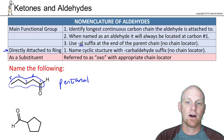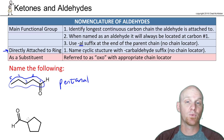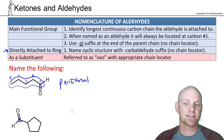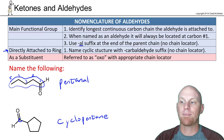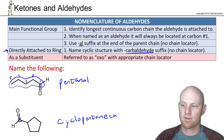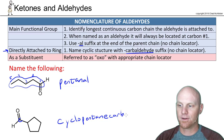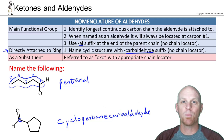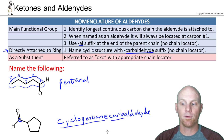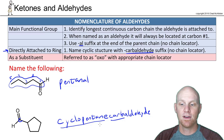If an aldehyde is directly attached to a ring — meaning the carbonyl carbon itself is directly bonded to the ring — first name the ring. A five-membered ring is cyclopentane. Then add the term carbaldehyde onto the end, giving cyclopentanecarbaldehyde. This naming makes sense because cyclopentane has five carbons, and the aldehyde adds one more carbon, making six total — not just five.